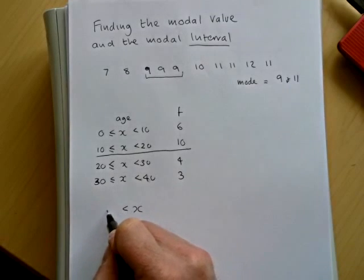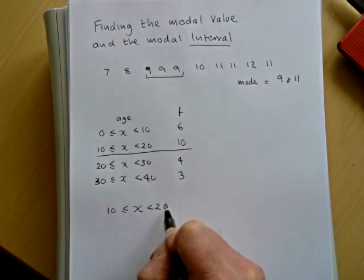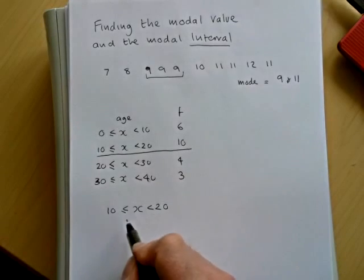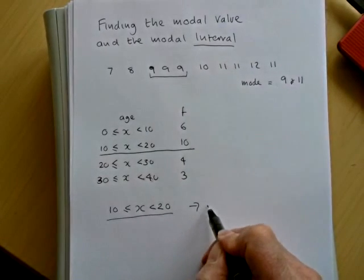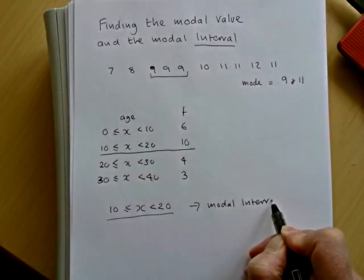So the interval is people that are aged ten up to twenty. It's written as x is greater than or equal to ten, less than twenty. And that is the modal interval. And that's often a mark that is lost. When you think about it, it's really quite easy to get.